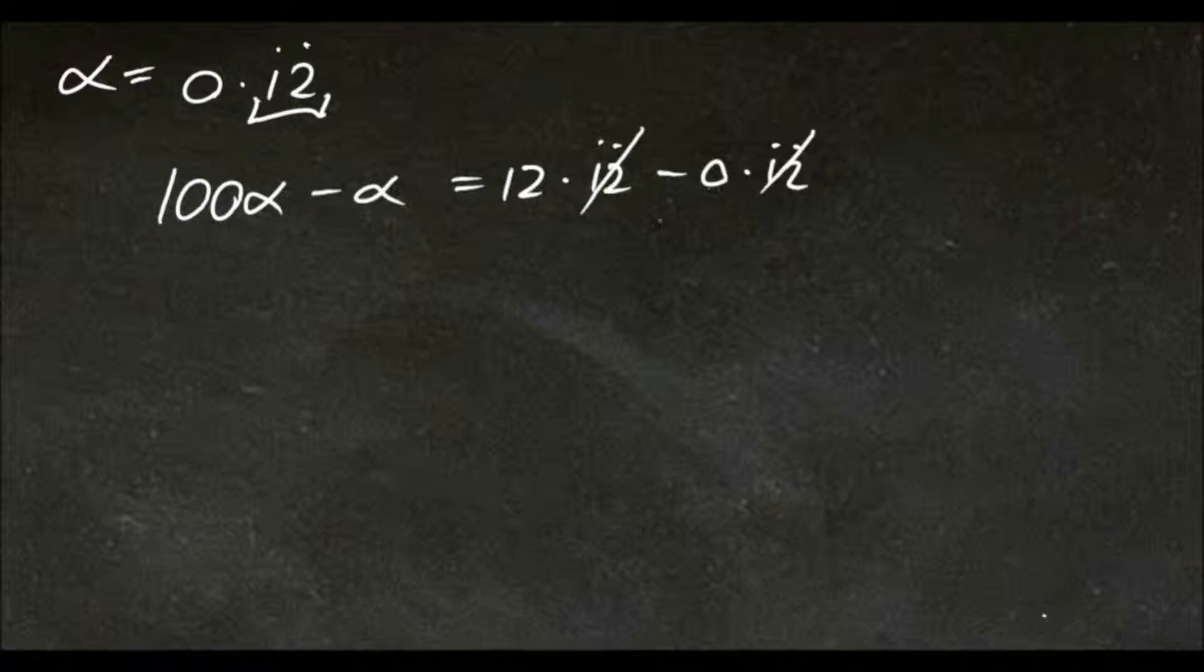We can get rid of the repeater and have that equal to 12. And this would just be 99 alpha. Rearranging would give us 12 over 99, which if you like could be written as 4 over 33.